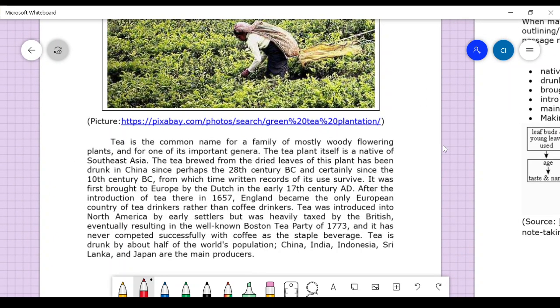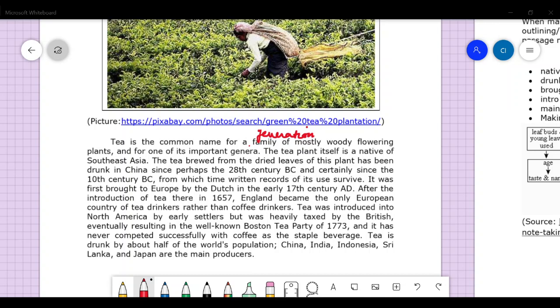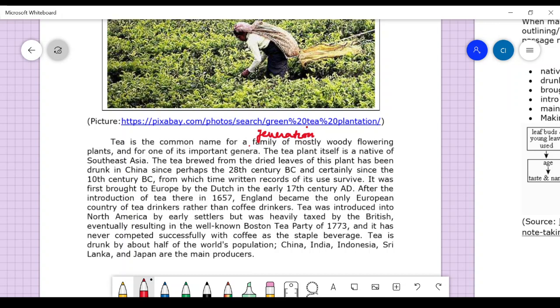Tea is a common name for a family of mostly woody flowering plants, and the most important genera. Genera is the short form, a general name that is given for generation. The tea plant itself is native to Southeast Asia.